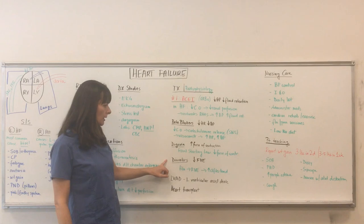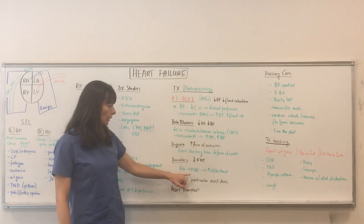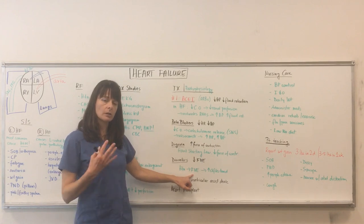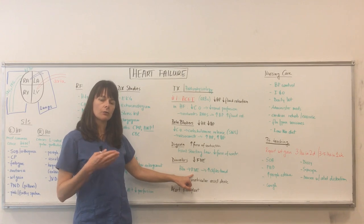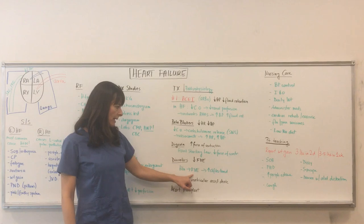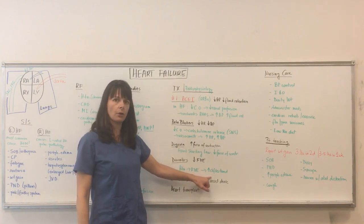Diuretics: in a patient with hypertension, there will typically be fluid volume excess. When there's a high sodium diet — and sodium is most likely the cause — water follows sodium, which means fluid volume excess, which increases the afterload.